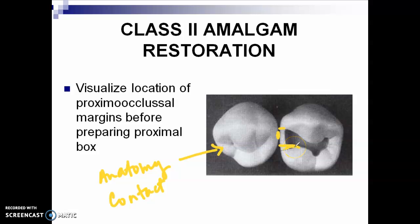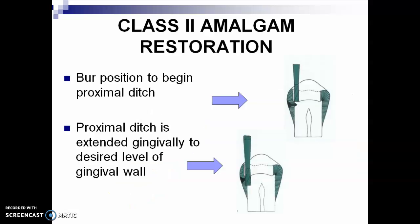If the caries would extend, you can extend more, as long as the margins of your preparation will not be on caries-susceptible areas — an example of a caries-susceptible area is your contact area. The burr position to begin the proximal ditch or proximal box extends gingivally to the desired level of the gingival floor. Take note that your proximal area converges towards the cervical, so the deeper you get, the greater the clearance or space with the adjacent tooth.